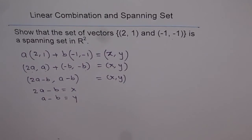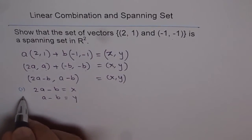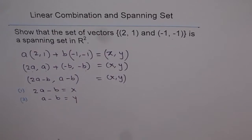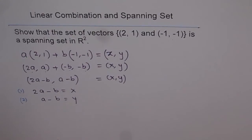So we get our equation 2a - b equals x and a - b equals y. Let's write these equations as equation number 1 and equation number 2. Now from these equations, we can find the value of a and b. These are 2 equations with 2 unknowns.